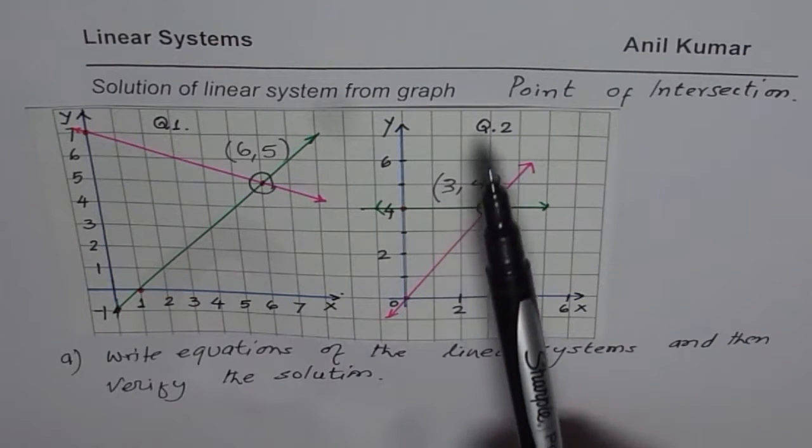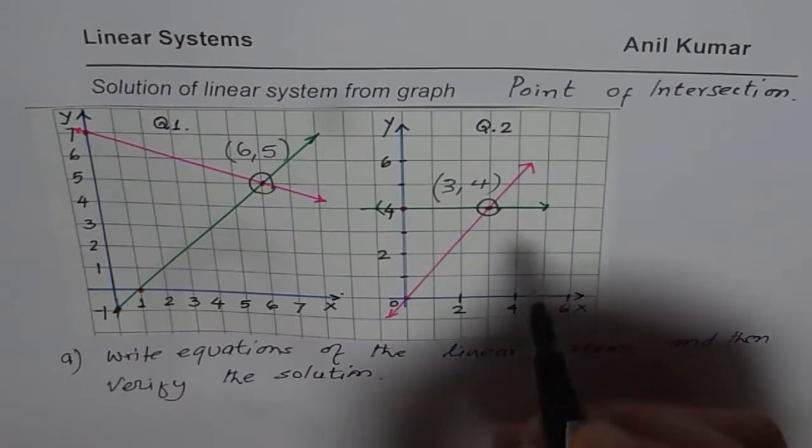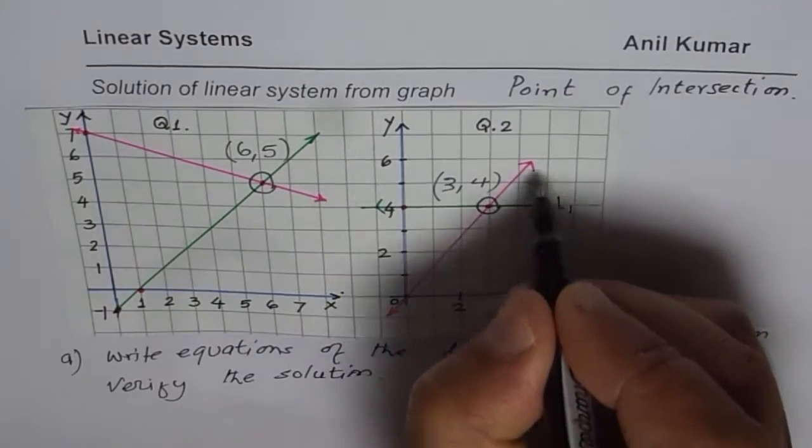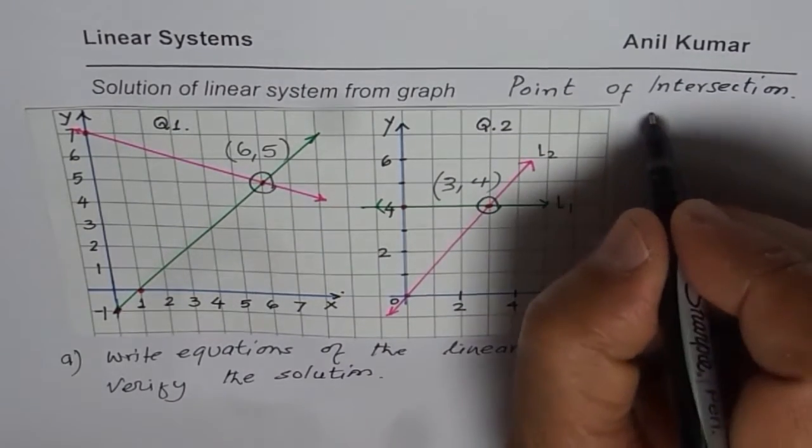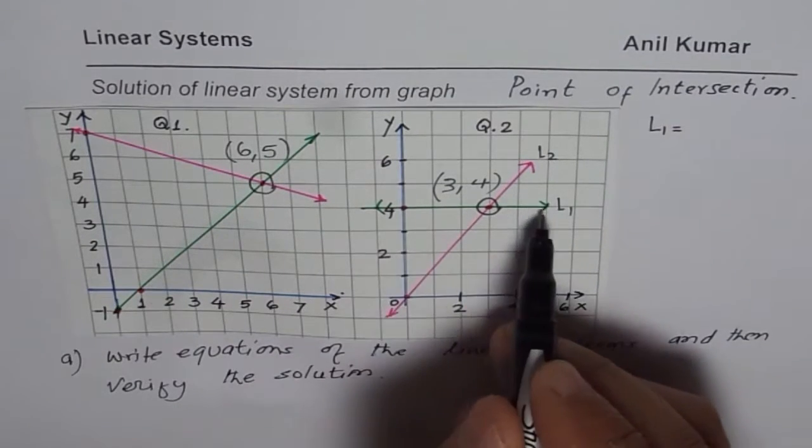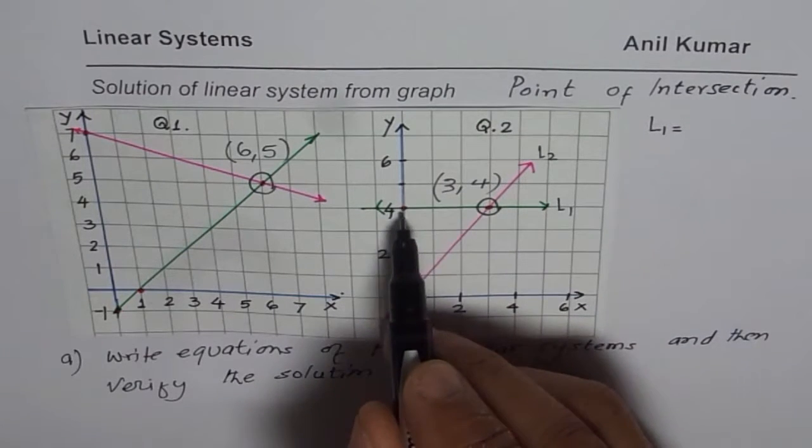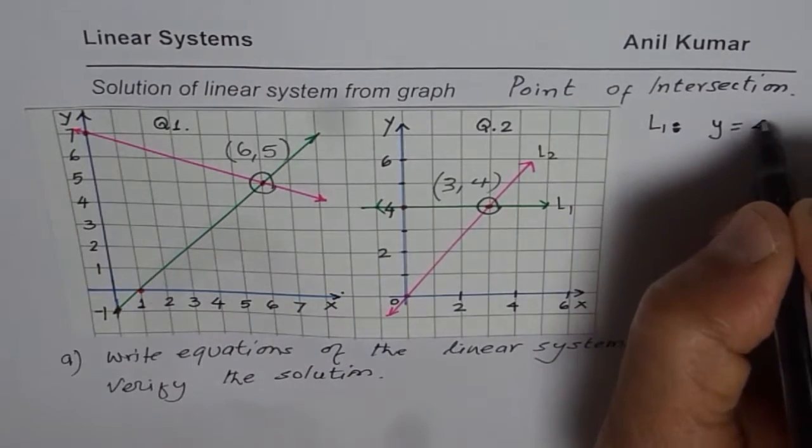Now for question number 2, let me write down the equations of the line. We can say this is line 1 and this is line 2. Equation of line 1 will be, this is a horizontal line. Since it is a horizontal line, at every point, y value is 4. So I could write this equation as y equals 4.